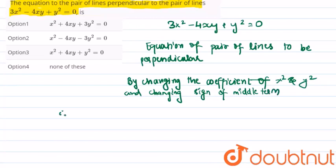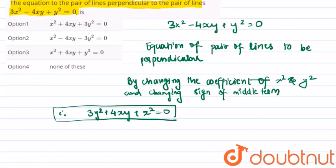That is 3y² + 4xy + x² = 0. So from this we get that option one, x² + 4xy + 3y² = 0, is the correct answer.